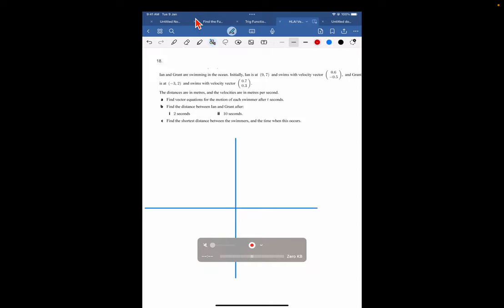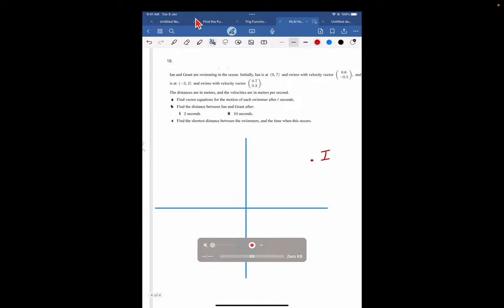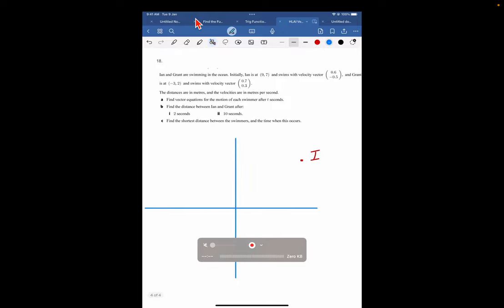Ian is at 9, 7. So, I mean, again, this is just roughly, it's not, I'll put this as I. This is the starting point for Ian. And Grant is at negative 3, 2. So Grant is at negative 3, 2. And there's Grant. And there he is. Let me just get my pen into... Okay, Ian and Grant.